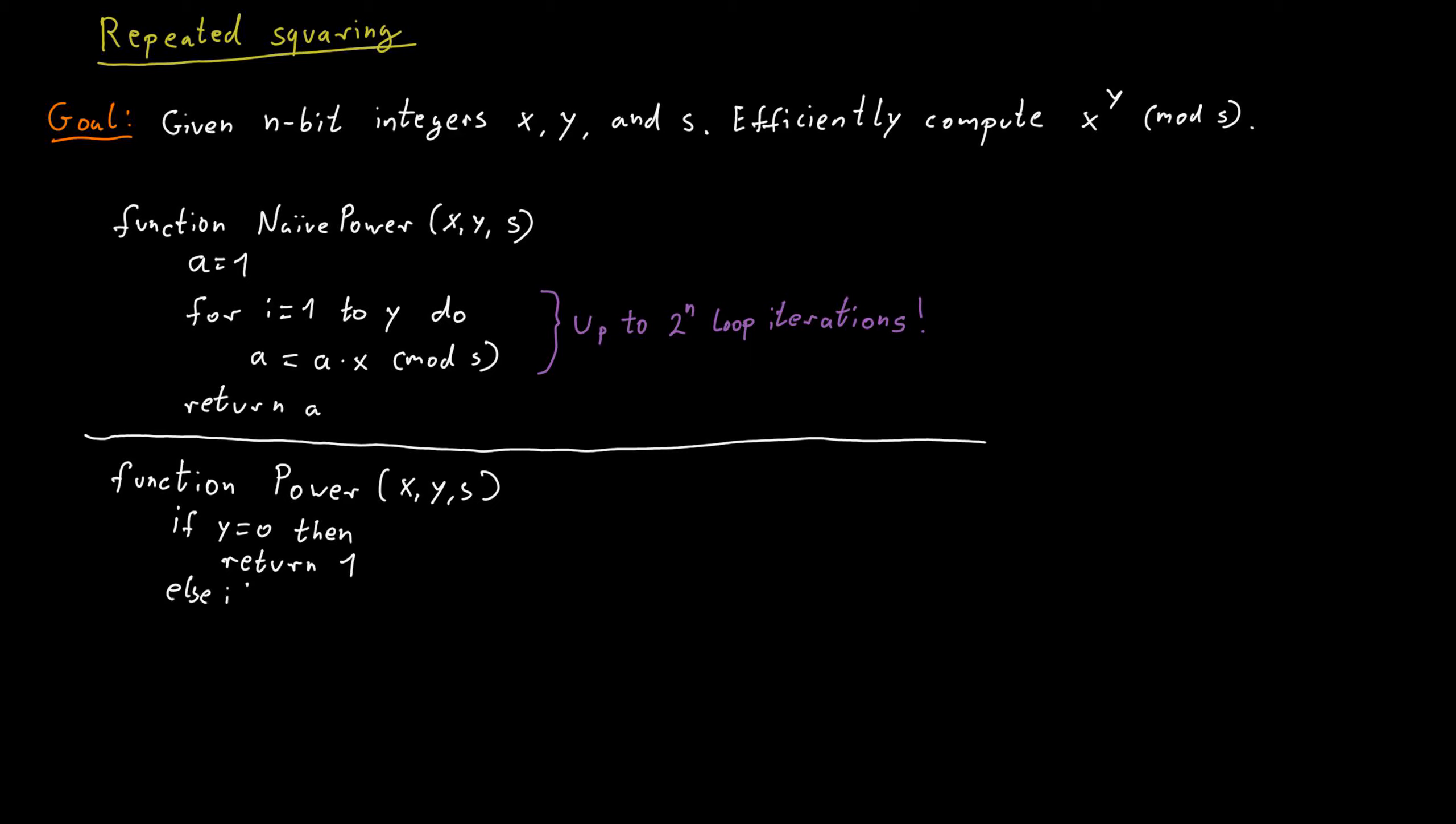Otherwise, if y is an even number, we compute a as x to the power of y divided by 2 mod s. And we do this by using our function recursively. And then we return the square of a mod s.